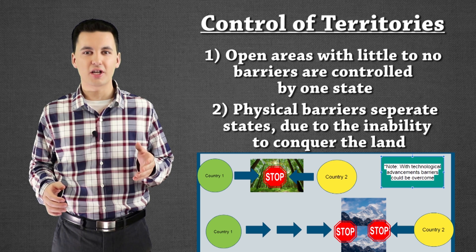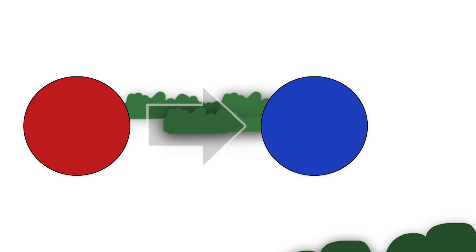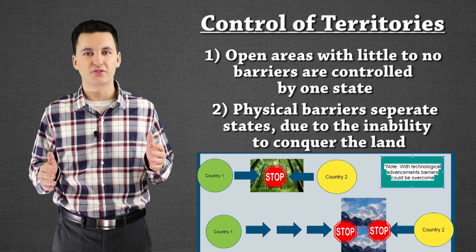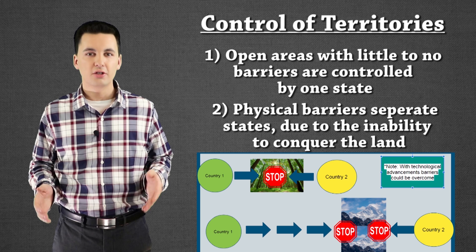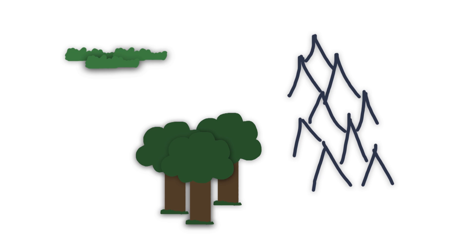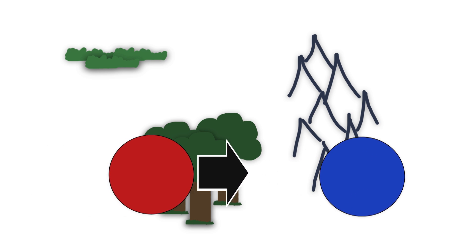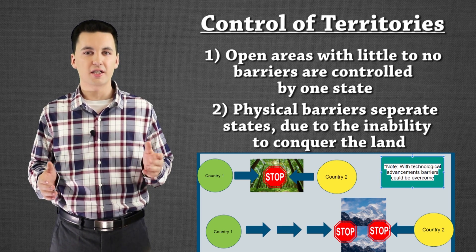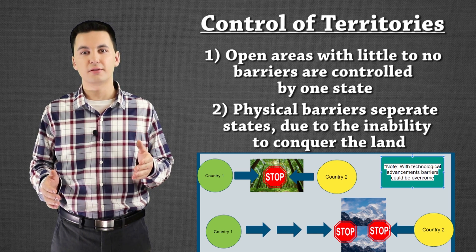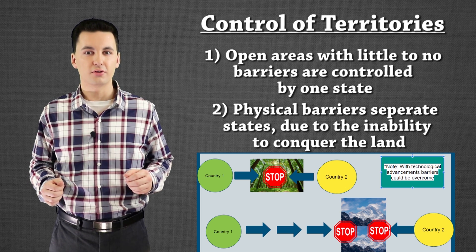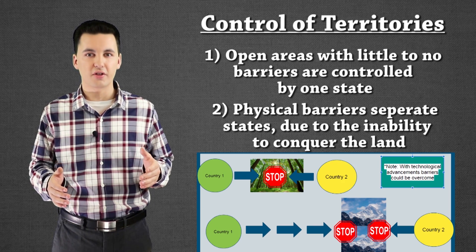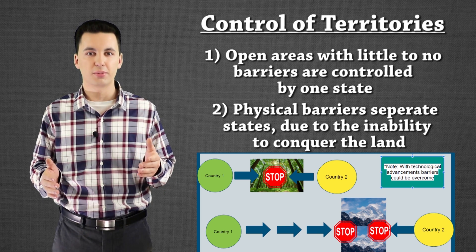When analyzing the terrain, Mackinder noticed a couple of different things. If the land was open without a lot of vegetation or obstacles — if it was low land — it made it easy for other states to come in and conquer. Because of this, these geographic areas were normally dominated by one state that had conquered others. However, if there were obstacles like mountains or forests that made it difficult to get through, those normally acted as barriers separating two different states. Mackinder noted that with technology, these barriers might eventually be overcome, but they would still make it more difficult.